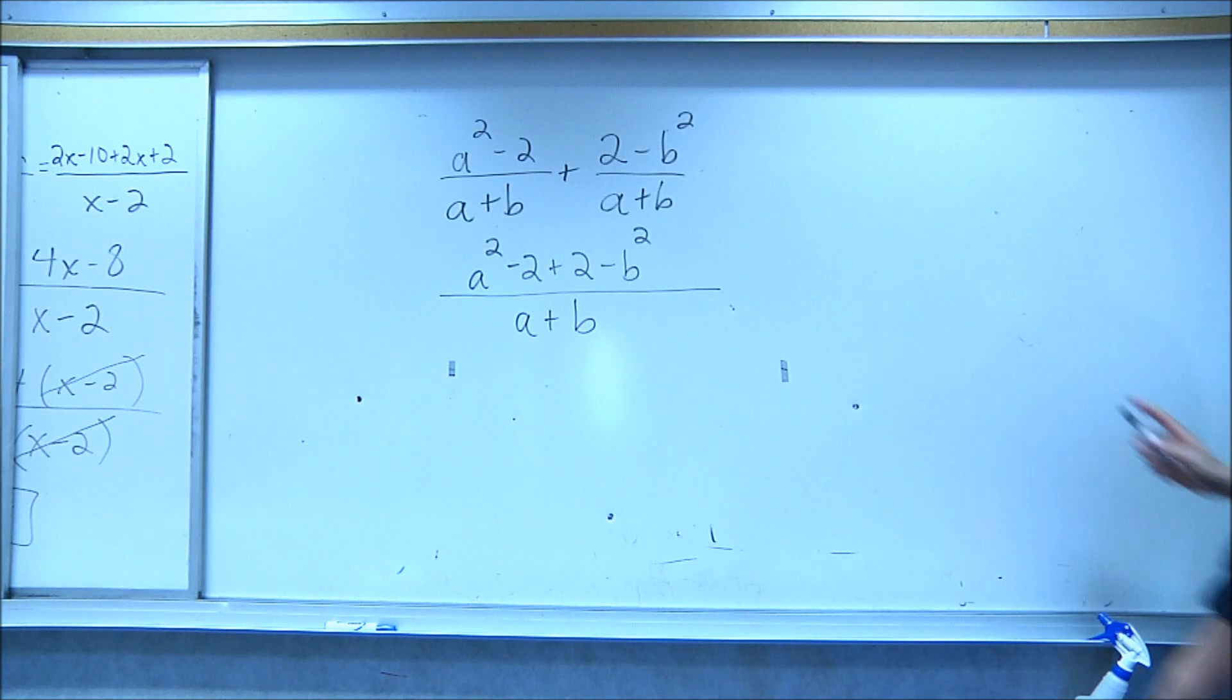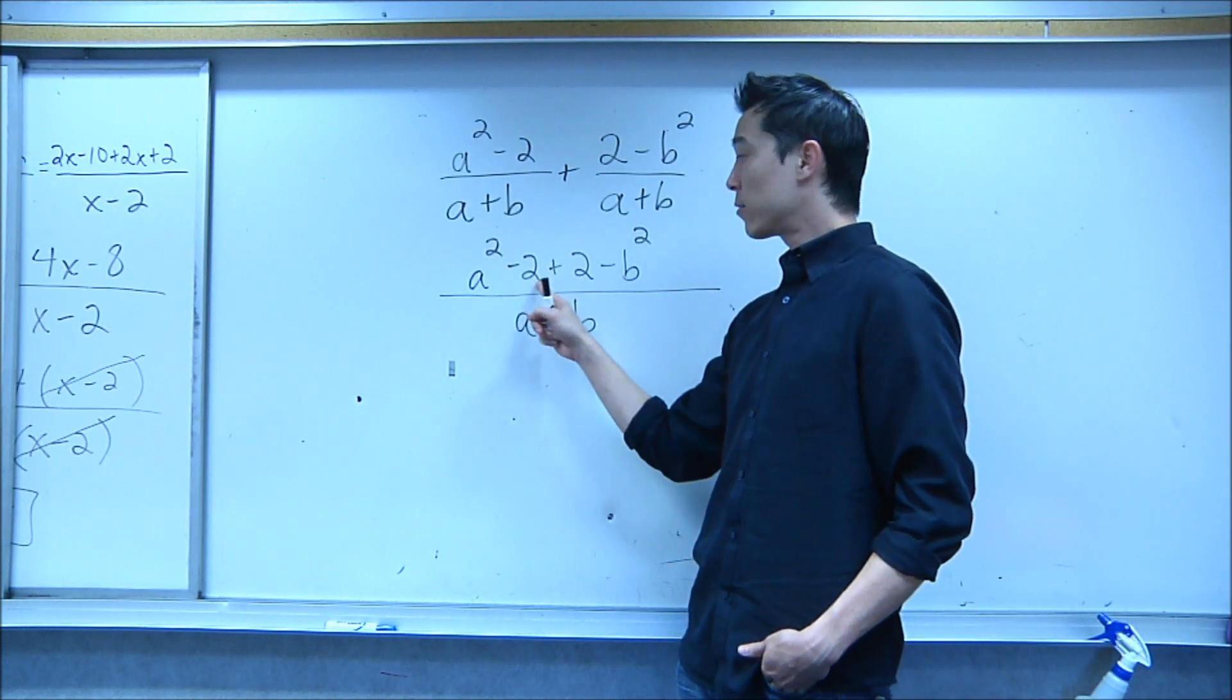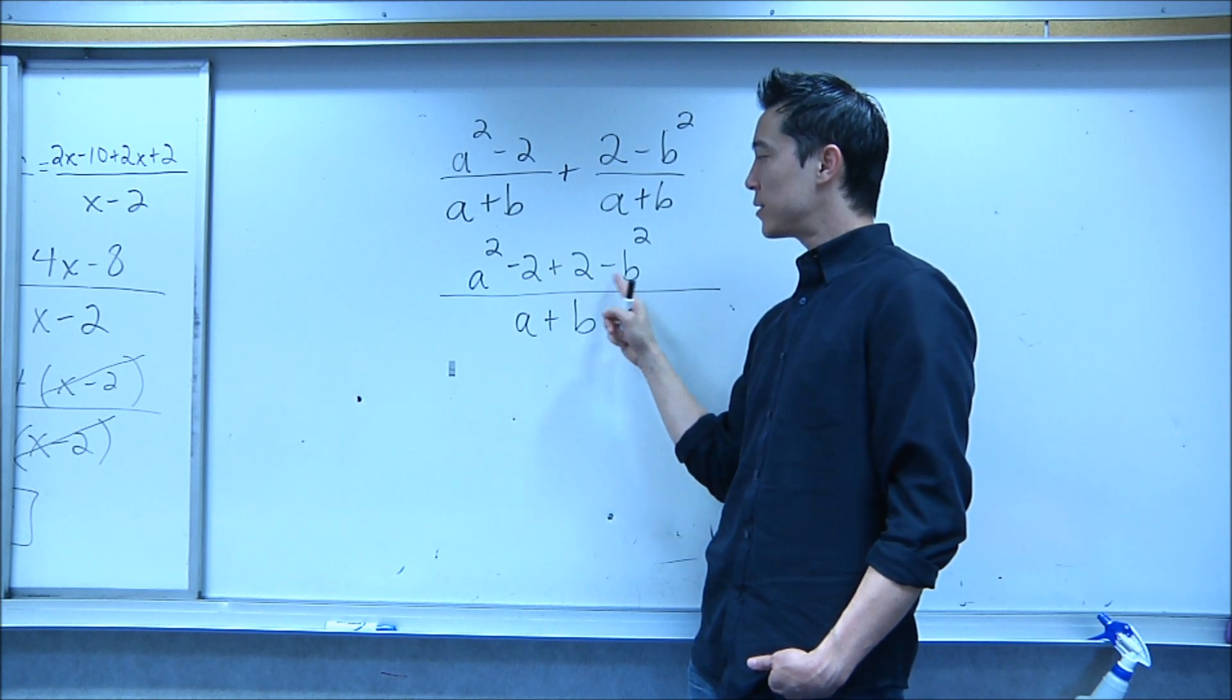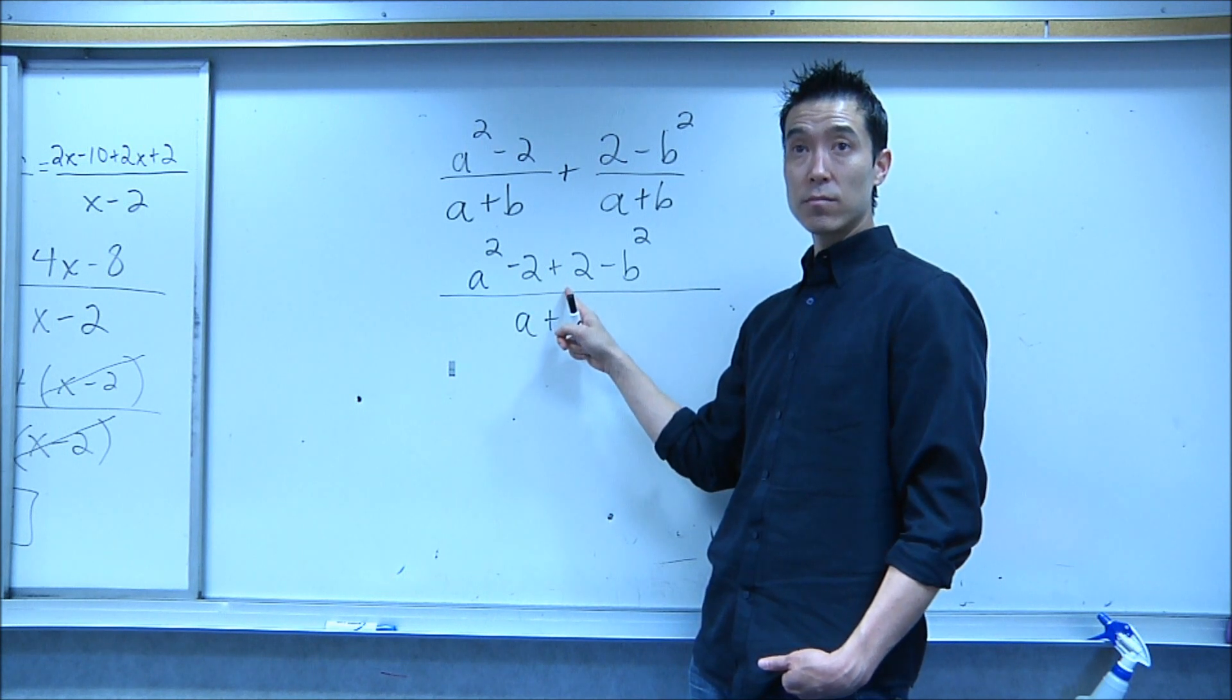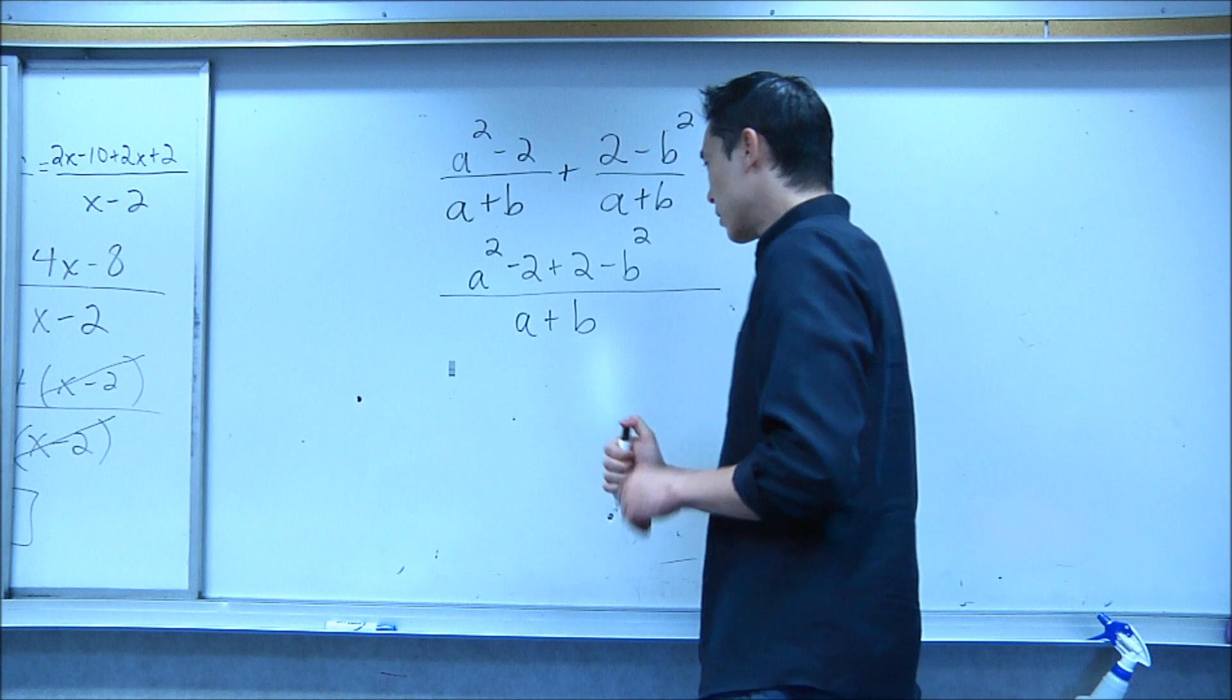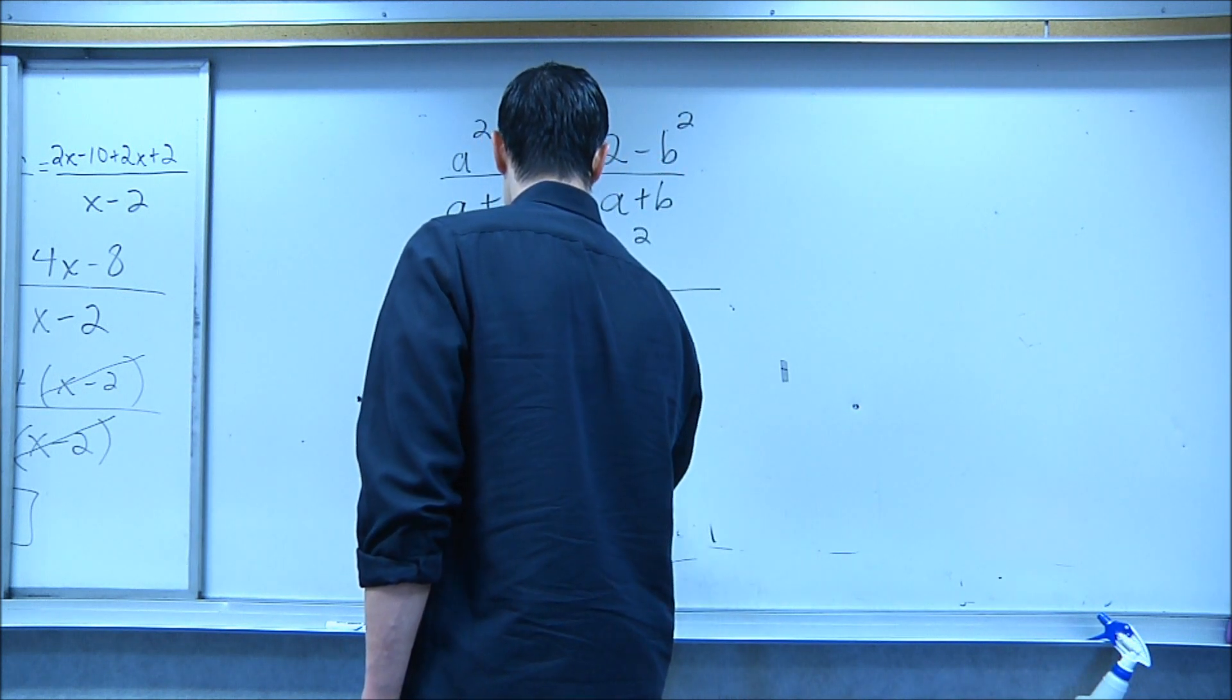Okay, so everybody should have done this for the first step. Just write down the denominator, write down all the terms in the numerator. a squared minus 2 plus 2 minus b squared. Well, minus 2 plus 2, that goes away, right? Negative 2 plus 2 is just 0. So your next step should look like this. a squared minus b squared over a plus b.